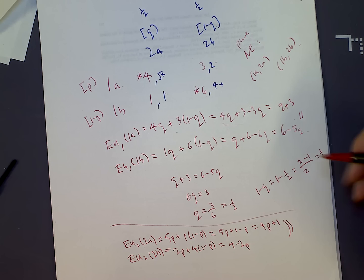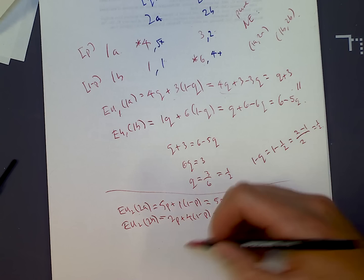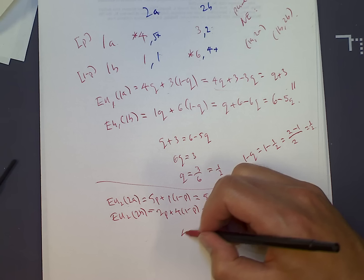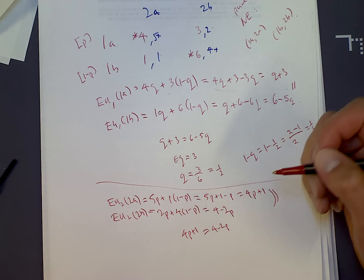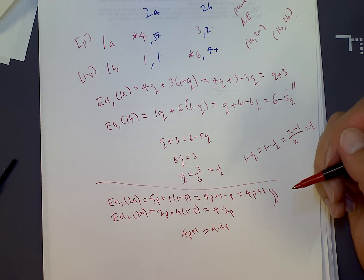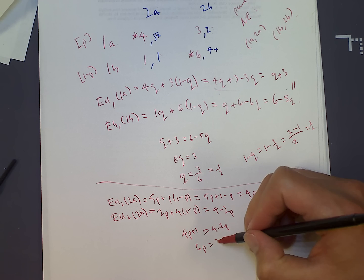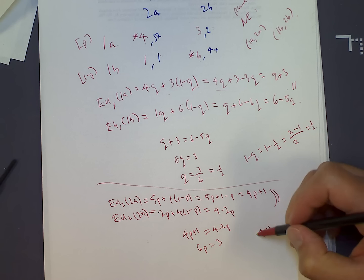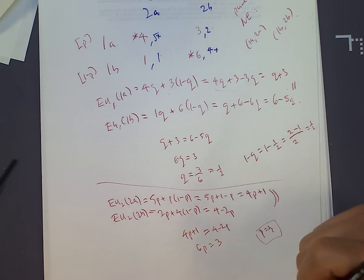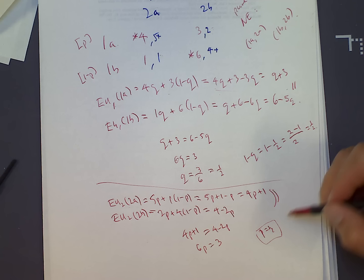Setting them equal: 4P plus 1 equals 4 minus 2P. Solving: 6P equals 3, so P equals 1/2. And 1 minus P is also 1/2.